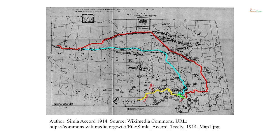South of this line is today the Indian state of Arunachal Pradesh. This line here is the boundary between China and Burma or Myanmar, because at that time Burma was a province of India. It was separated from India in 1937, so in 1914 it was still a province of India. The McMahon Line extends into Myanmar.